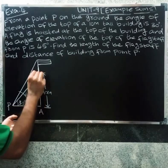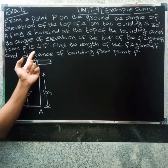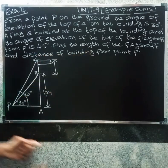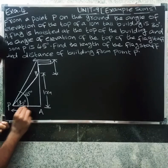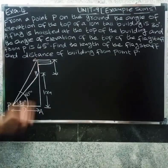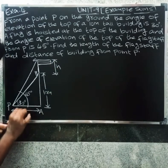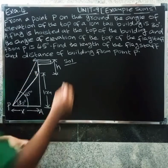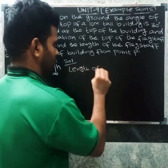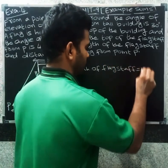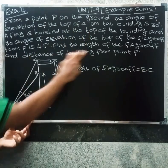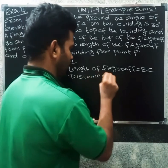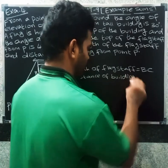So this is point P, this is A, this is B, this is C. First of all, find the length of the flagstaff BC, and the distance of the building from point P, which is the distance PA.